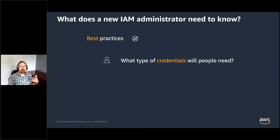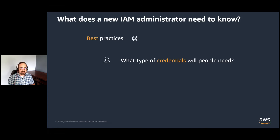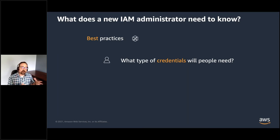Credentials. When you interact with AWS, you specify your AWS security credentials to verify who you are and whether you actually have the permission to access the resources you're requesting. AWS requires different types of security credentials depending on how you want to access AWS services. Today I'm going to talk about interactive access via the console and a programmatic interface. First, console access — this type of interaction is through your web browser. You'll navigate to aws.amazon.com and then log in with a username and password. Those are your credentials.